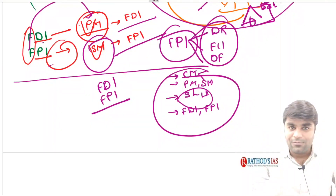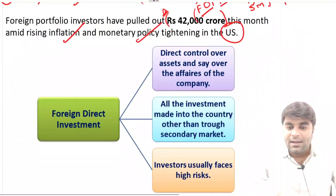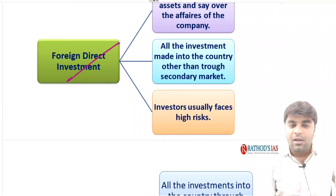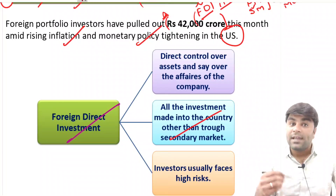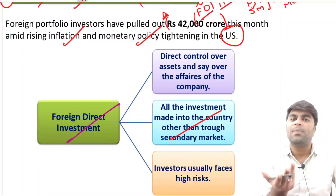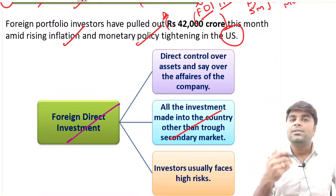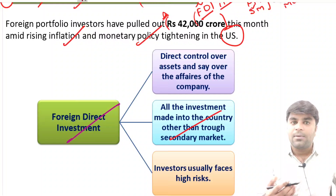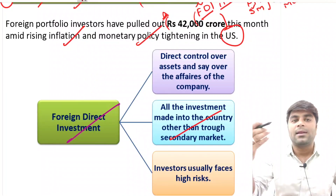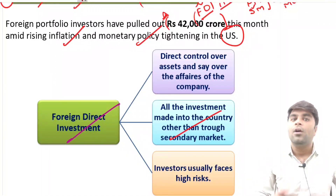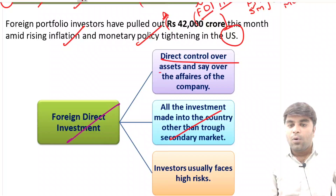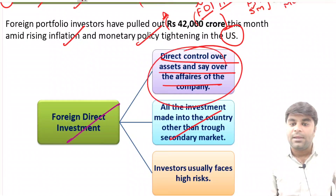The basics are clear for you now, so you can understand the current affairs. All investments made into the country other than the secondary market are called foreign direct investment — through the primary market via IPO, Follow-on Public Offering, and Offer for Sale. We call it a direct investment because there is direct control over the assets and affairs of the company.